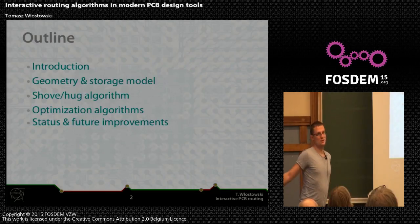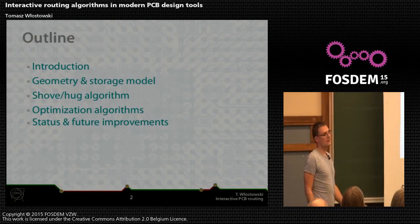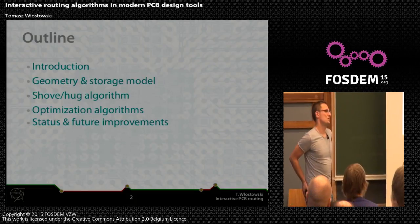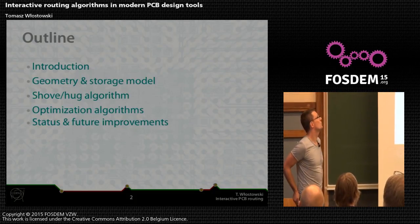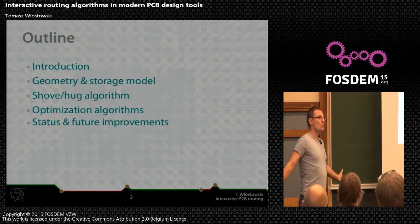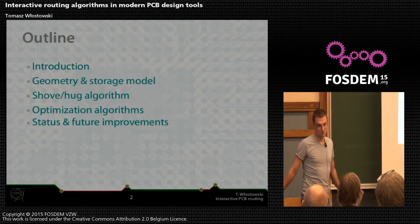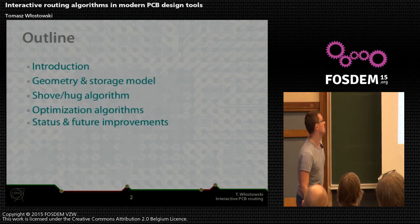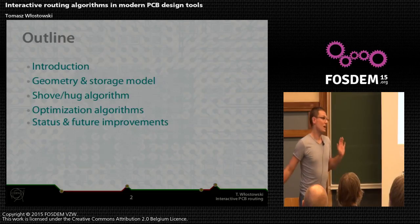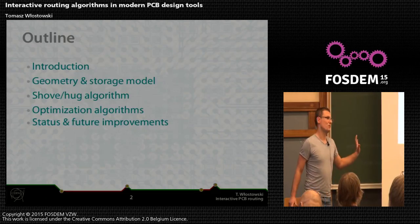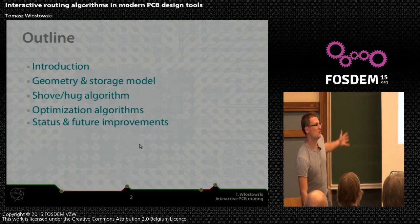The outline is: first, a little bit of introduction to the routing algorithms; then the geometry and storage model we used in our router; then the core of the router, which is the push and shove hack algorithm; some words about the optimization strategies; and a little on the status and future improvements. I'll be browsing very quickly through the slides because I have only 12 minutes and the material is quite big, so I will give you handouts after the presentation.